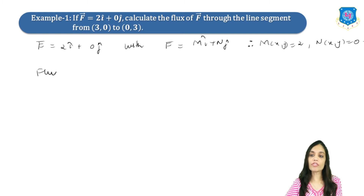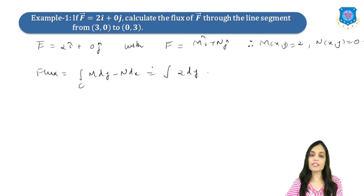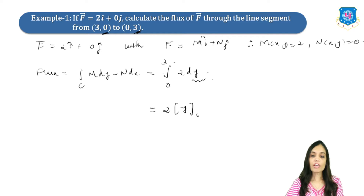Now write the flux formula: line integral over C of M dy minus N dx. Putting M = 2 and N = 0, we get the line integral of 2 dy, since the N term vanishes. The limits of y go from 0 to 3, so we integrate: 2 times y from 0 to 3, which gives 2 times (3 minus 0) = 6.